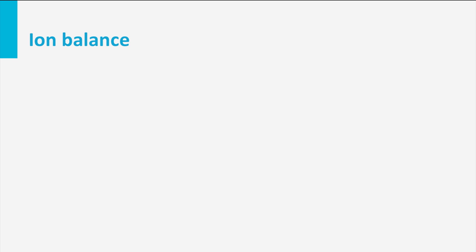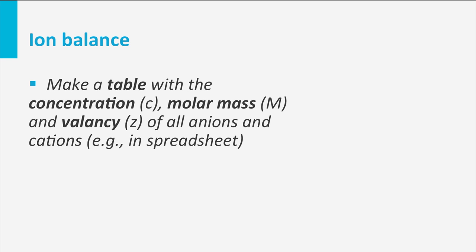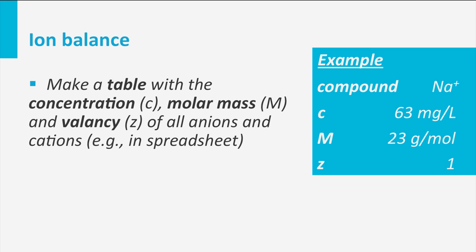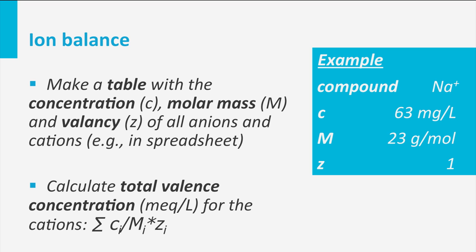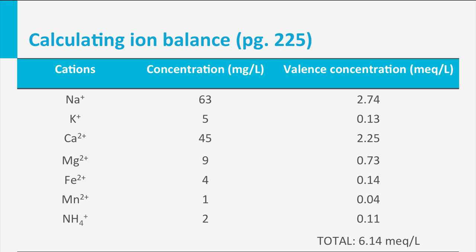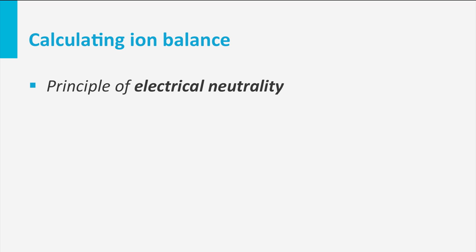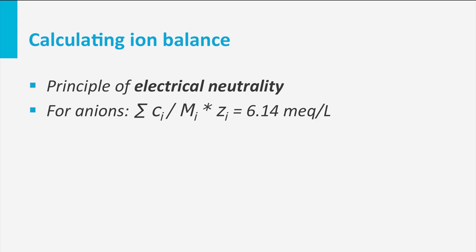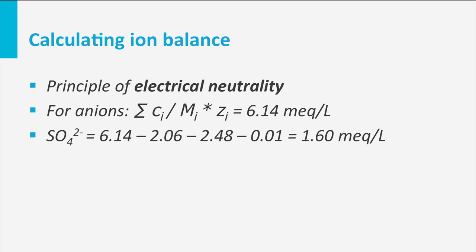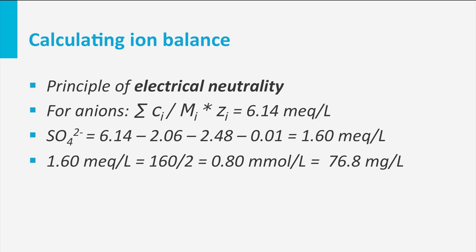First, you make a table with the concentration, molar mass, and valence of all anions and cations, for example in a spreadsheet. For sodium this is depicted in the slide. Then calculate the valence concentration in milliequivalents per liter for all cations. This adds up to a total valence concentration of 6.14 milliequivalents per liter. Now based on the principle of electrical neutrality, also the anions should add up to 6.14. When subtracting the valence concentration of the other anions — chloride, bicarbonate, and nitrate — you end up with a valence concentration of 1.6 for sulfate. This equals 76.8 mg per liter.